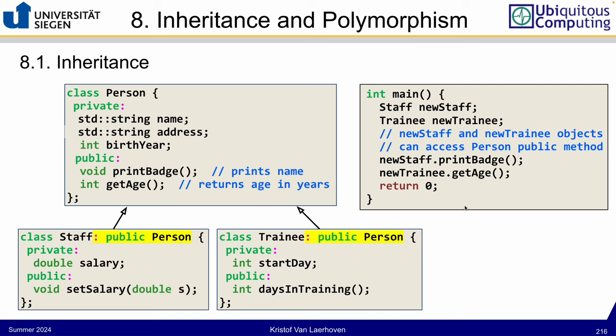The new thing with inheritance is that we can access everything that is public to a class. We can also have private inheritance, though it's not done in many languages — other programming languages usually do public inheritance. Typically when you inherit, you inherit publicly, meaning you can access everything that is public from the main class.